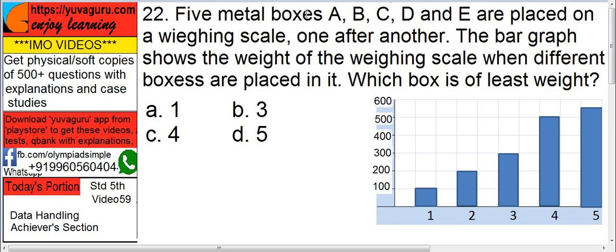Five metal boxes A, B, C, D, and E are placed on the weighing scale one after another. First one is placed, then two, then three, then four, then five. The bar graph shows the weight.